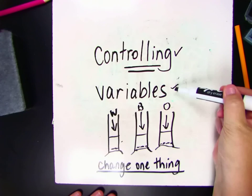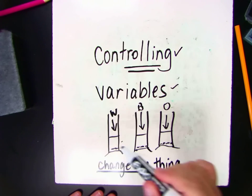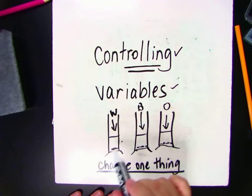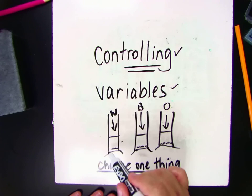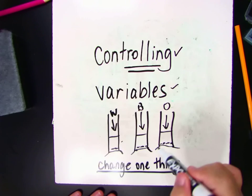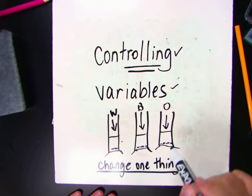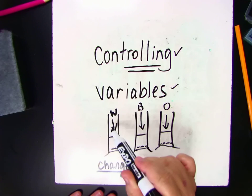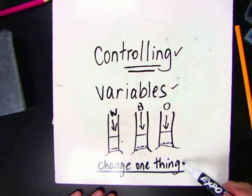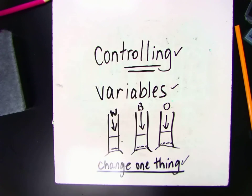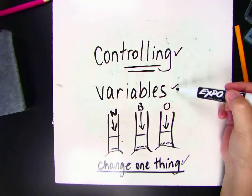So we controlled our variables. We made sure everybody got 25 milliliters of water. We had the same container. We put the same amount of yeast in each container. But the one thing we changed was what we fed them. And that's the one thing that we need to find out. So that's controlling our variables.